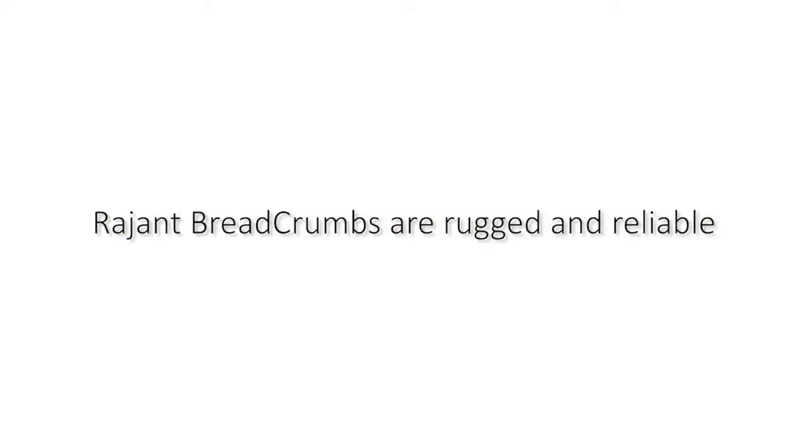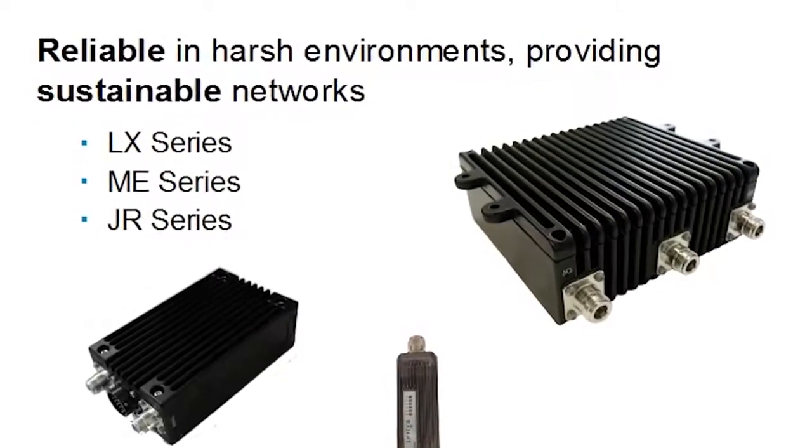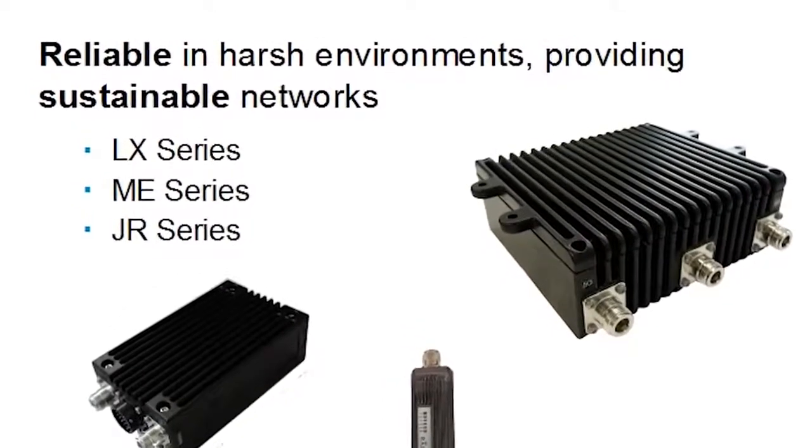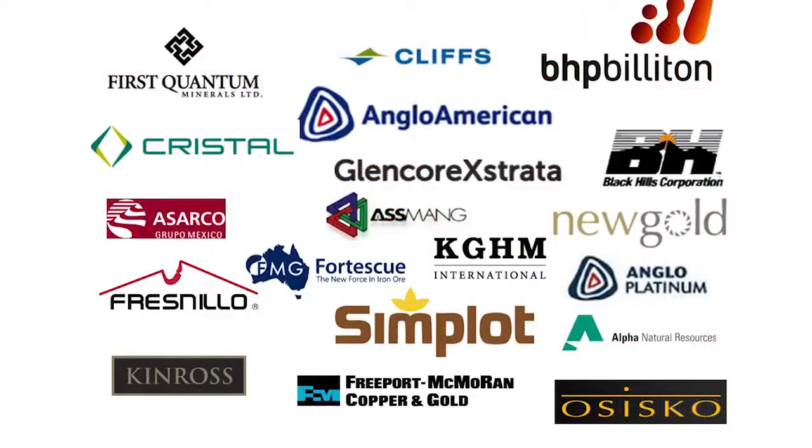Breadcrumbs are ruggedly built. They're protected from vibration, shock, water, dust, and heat. Rajant has over a decade of experience with military and mining customers that are very tough on breadcrumbs and our breadcrumbs hold up in the field. We've seen temperatures in the field ranging from negative 40 up to 115 degrees. Breadcrumbs kept going.